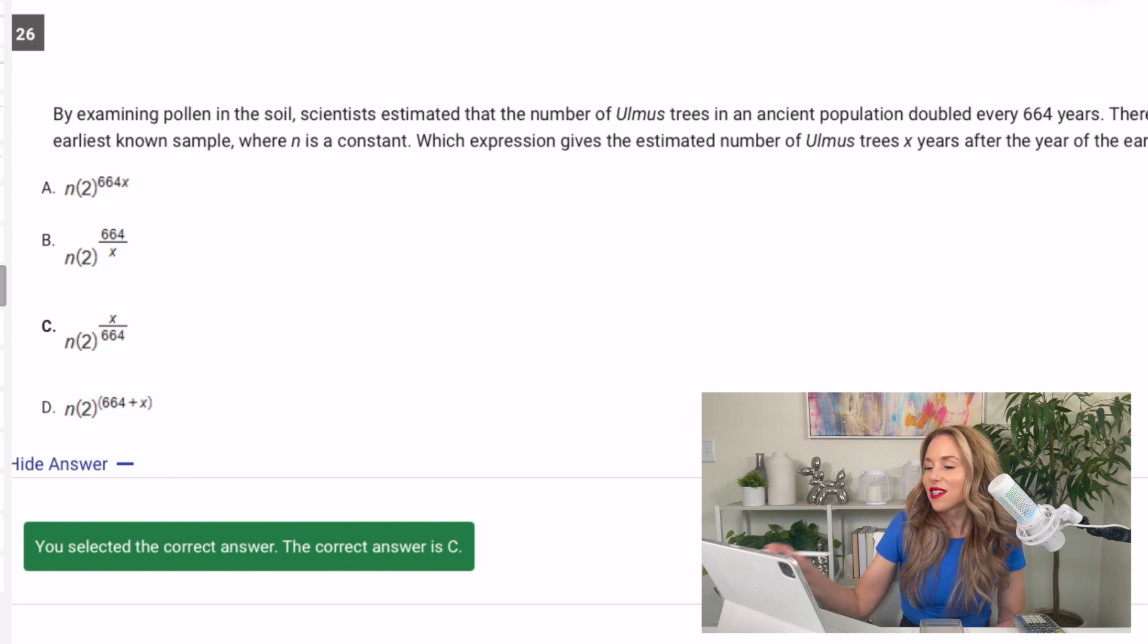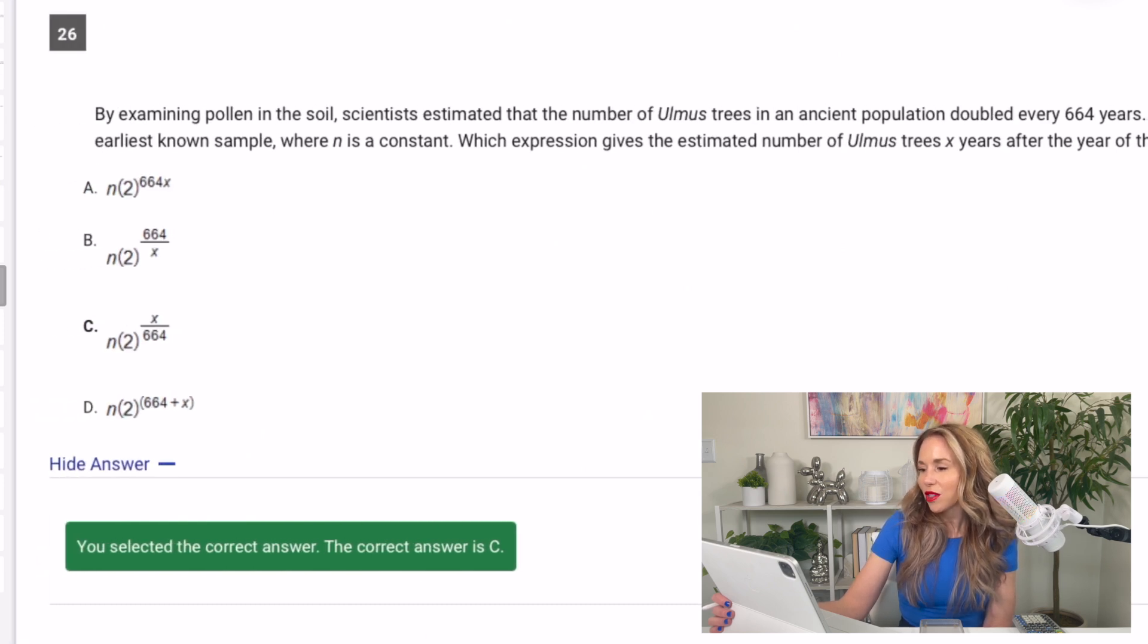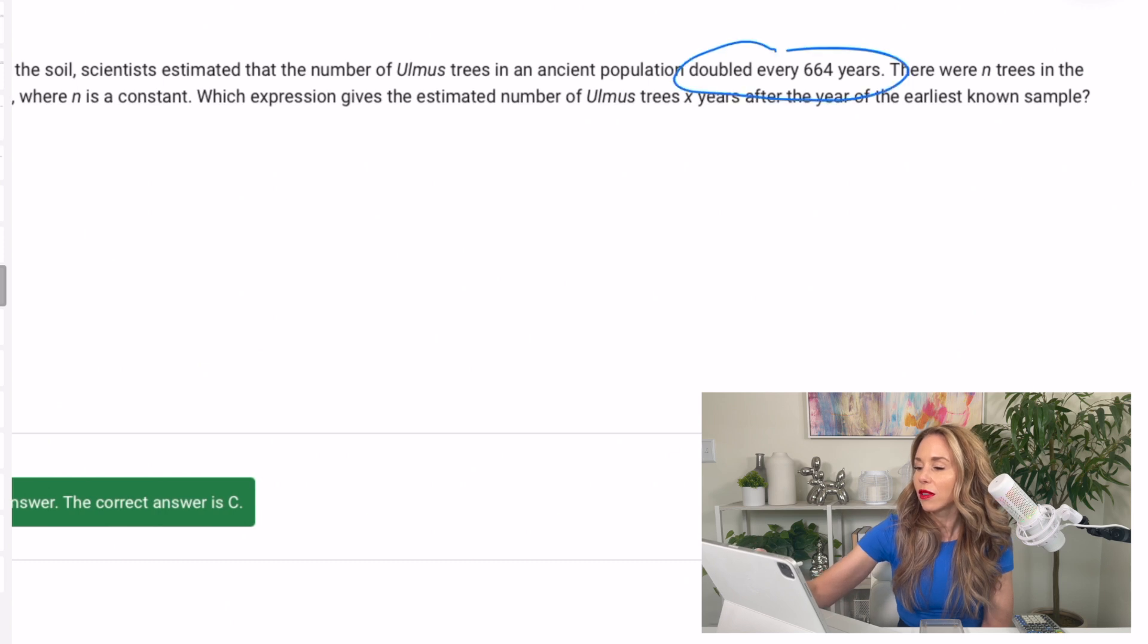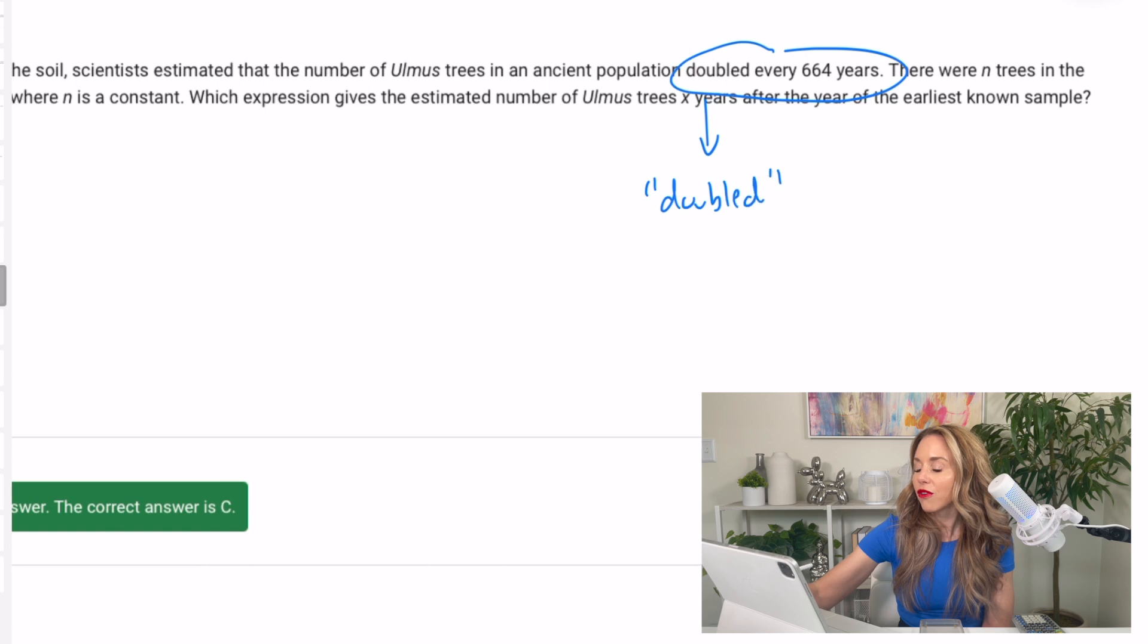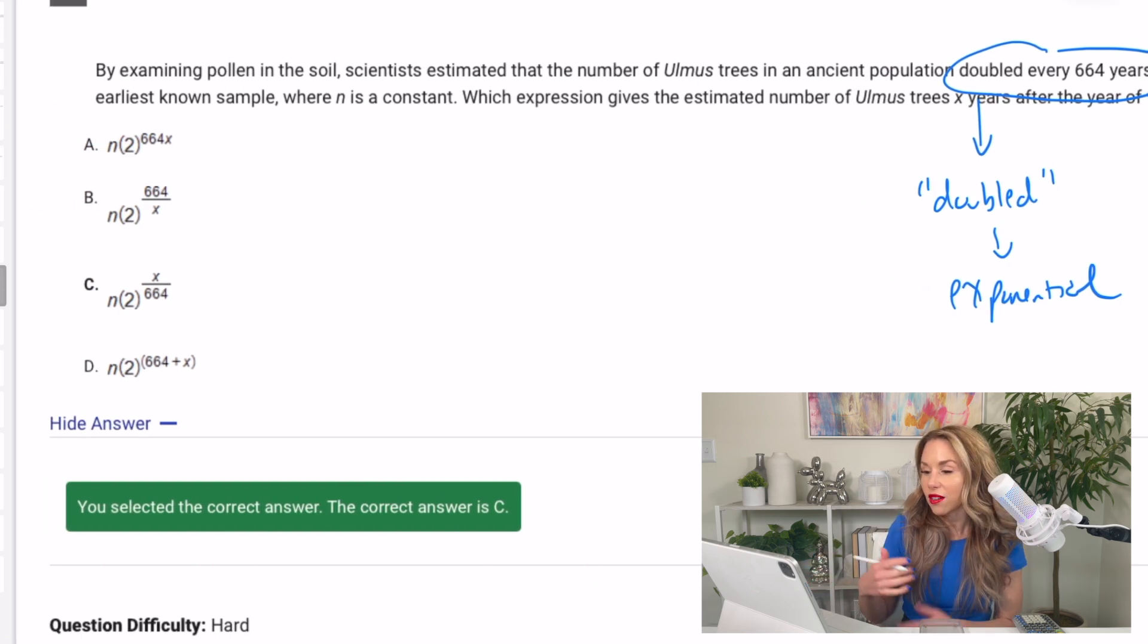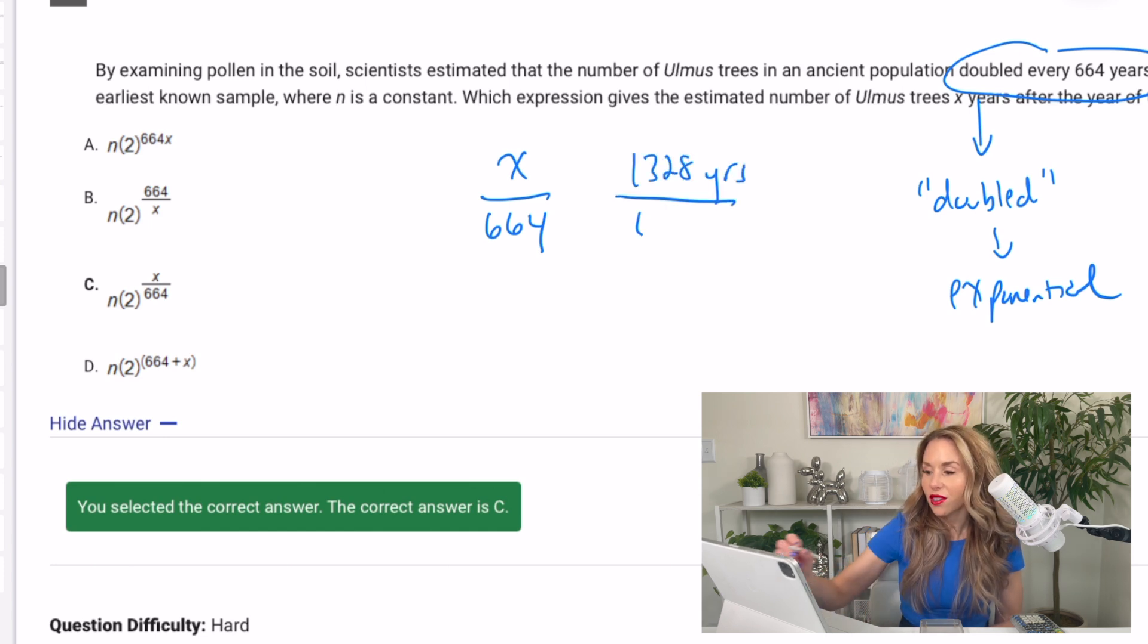We have examining pollen in the soil. Scientists estimated that the number of Olmus trees in an ancient population doubled every 664 years. There were n trees in the earliest known sample where n is constant, which expression gives the estimated number of Olmus trees x years after the year of the earliest known sample. Well, this is the key. It doubled every 664 years. When I see the word doubled, I think exponential. So I'm looking for an exponential function with a two on the inside, and they have it for all of them on this. So that doesn't help us. Every 664 years means however many years you have, you have to divide by 664 because there's only one iteration every 664 years. So for instance, if 1,328 years go by and it only happens once every 664 years, you're really going to have two iterations. So I need to pick C.